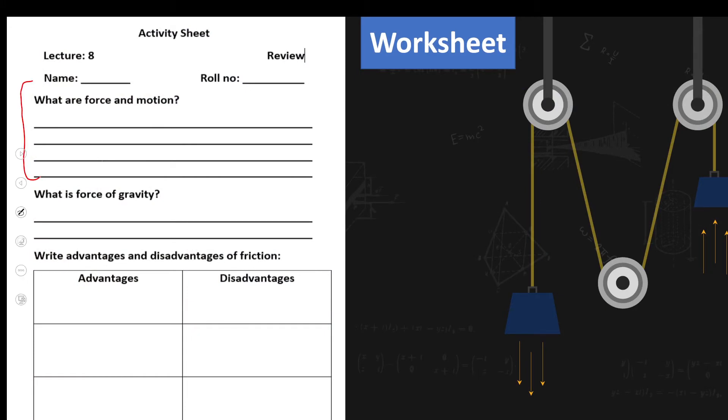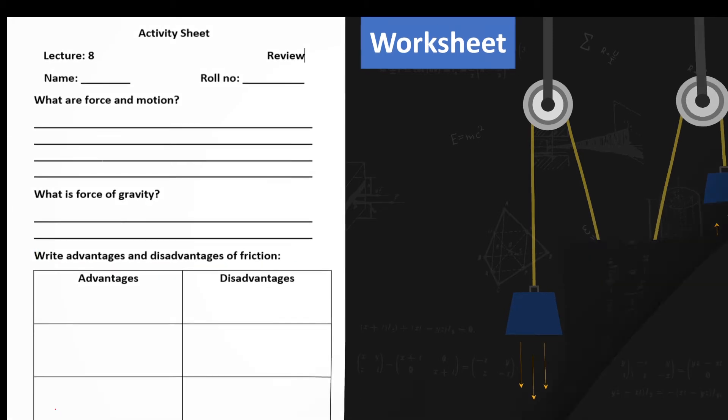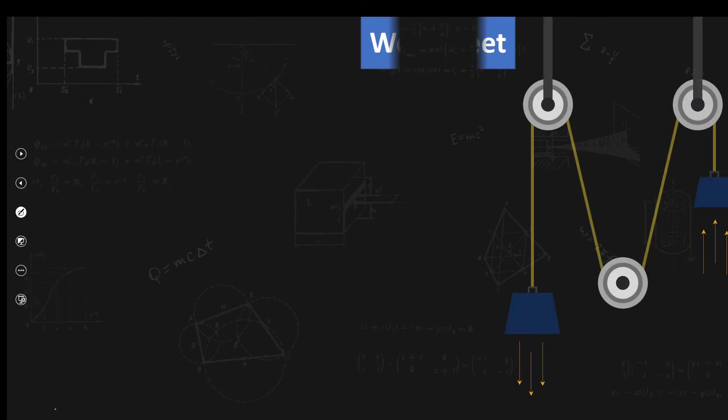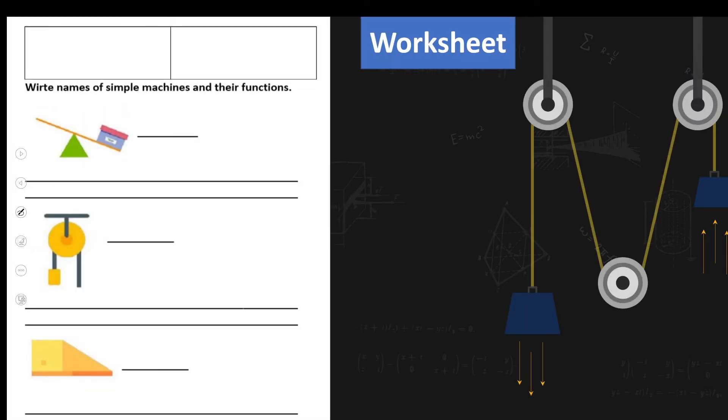What are force and motion? You have to define it. What is force of gravity? Write advantages and disadvantages of friction. Then you have to write names of simple machines and their functions. Here are some simple machines given to you. You have to write their names and functions in the given spaces. Pause the video and quickly finish the worksheet.